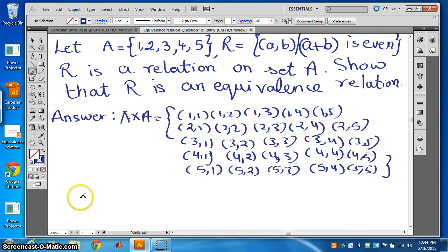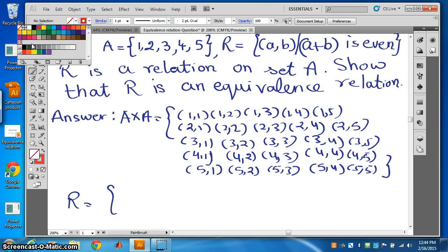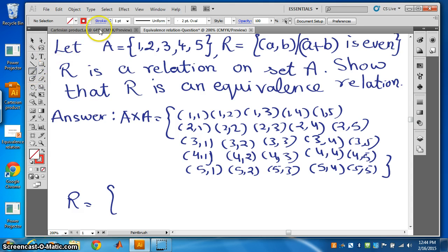We have to select all those ordered pairs from A cross A when a plus b is even. This is a and this is b. The sum should be an even number. Let's change the color to circle those ordered pairs.